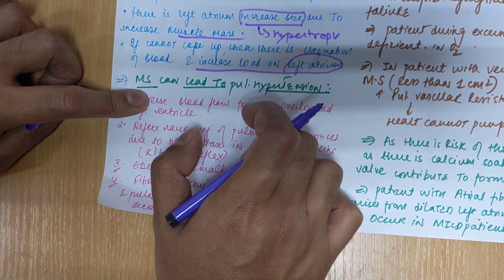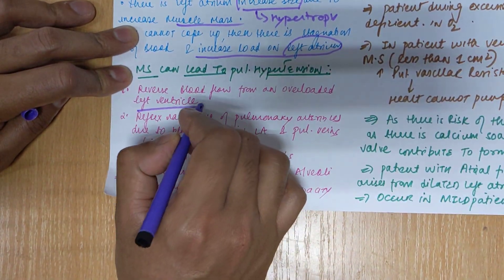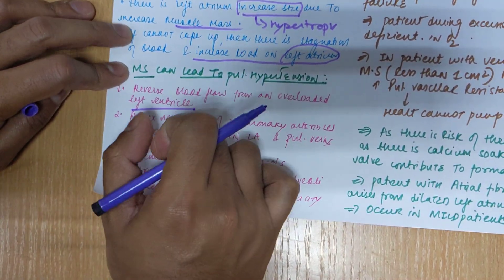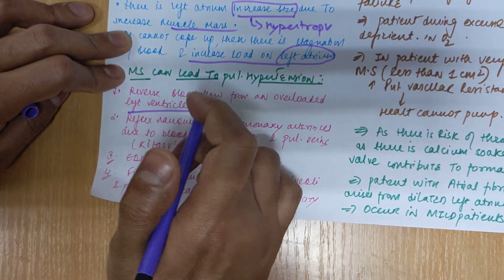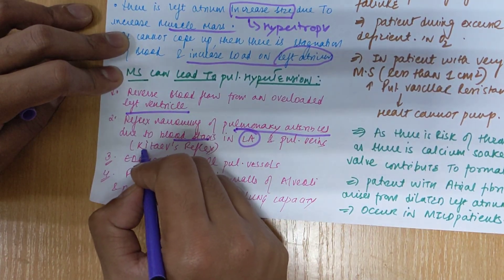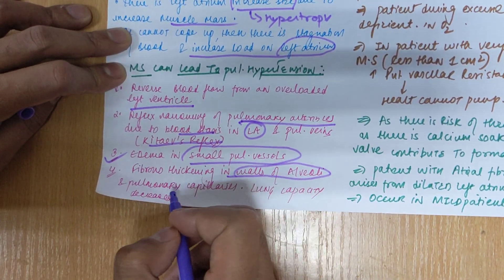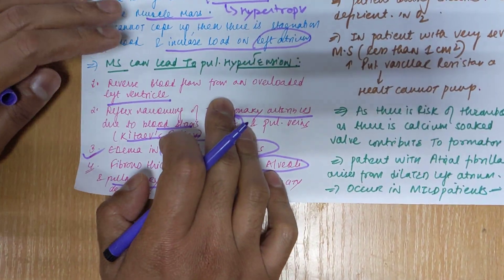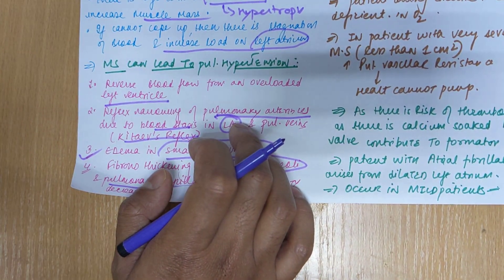Mitral stenosis can lead to pulmonary hypertension. The overloaded left atrium causes reverse blood flow toward the pulmonary arteries, increasing pressure there. A reflex narrowing of pulmonary arterioles occurs — known as the Kitayama reflex — due to blood stasis in the left atrium and pulmonary veins. There is also edema in small pulmonary vessels, fibrous thickening in the walls of the alveoli, and reduction in lung capacity — both vital capacity and total lung capacity decrease.